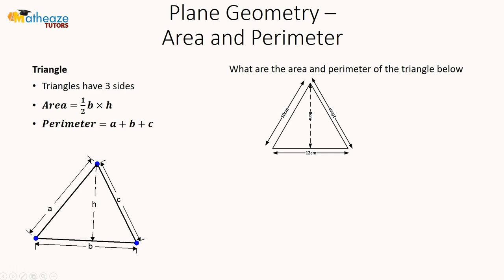A triangle has three sides. The area of a triangle is one half of the base times the height, and the perimeter is the sum of all the sides. In another lesson we'll look at the different types of triangles — those with all equal sides, two equal sides, or no equal sides.